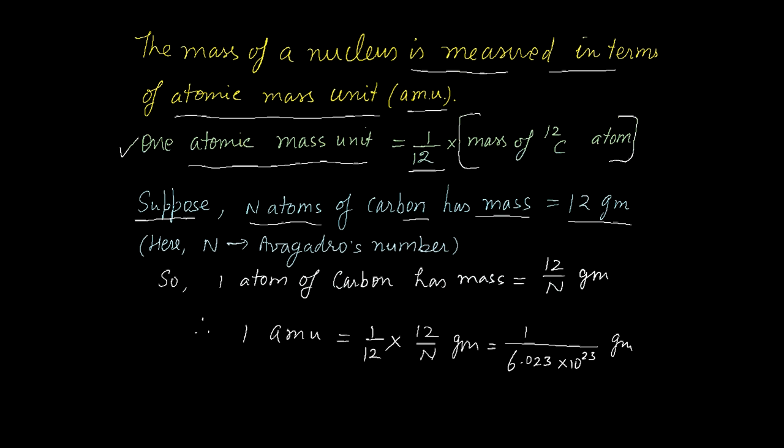Suppose N atoms of carbon has mass equal to 12 grams. Here N is Avogadro's number, equal to 6.023×10²³. So one atom of carbon has mass equal to 12/N grams. Now 1 amu, according to the definition, will be equal to 1/12 × 12/N grams.